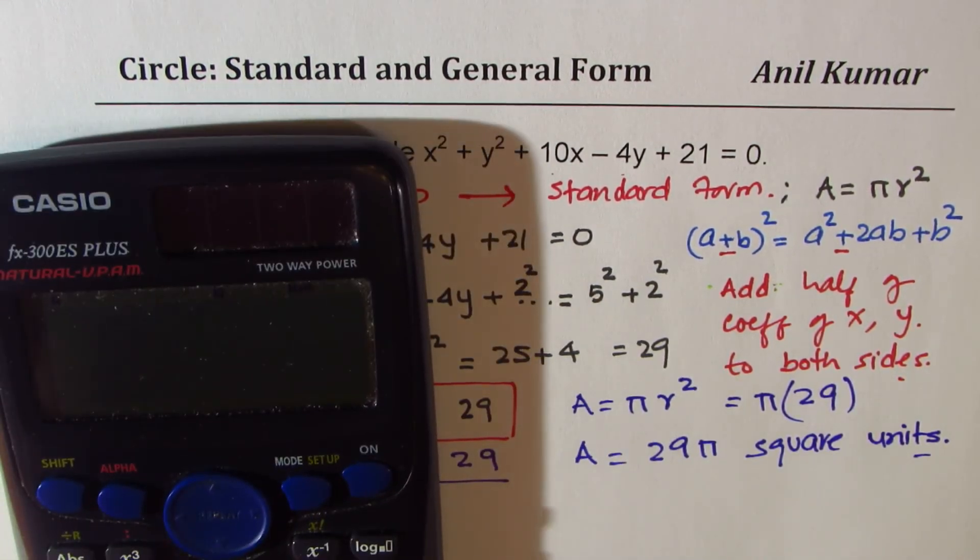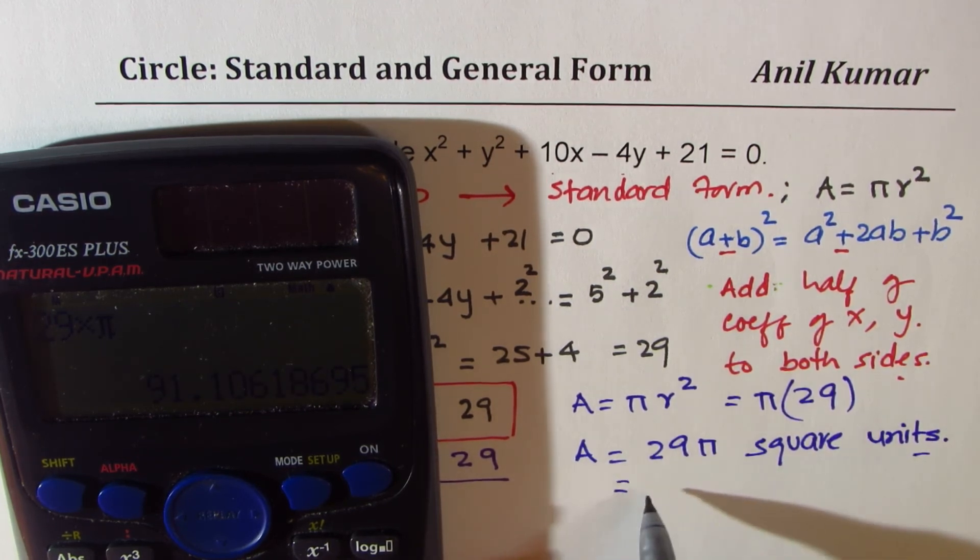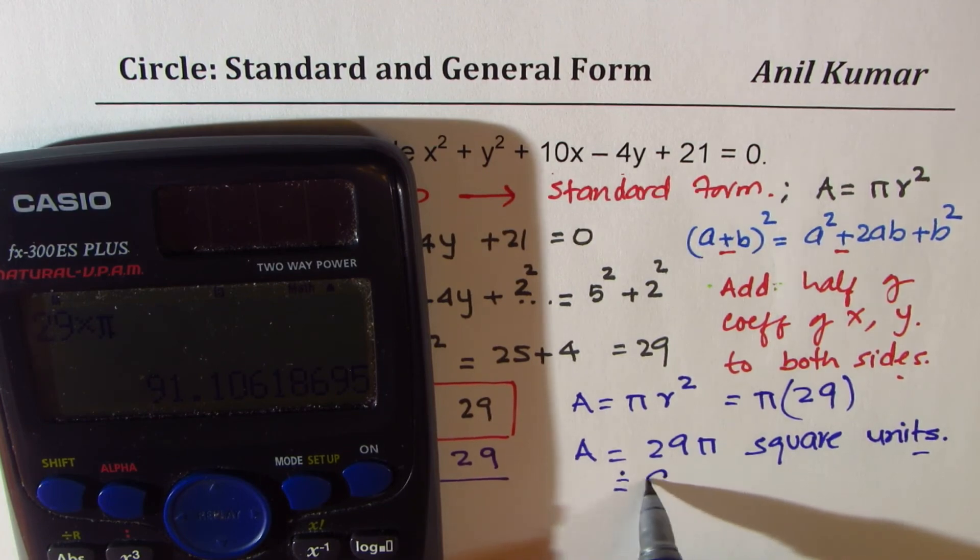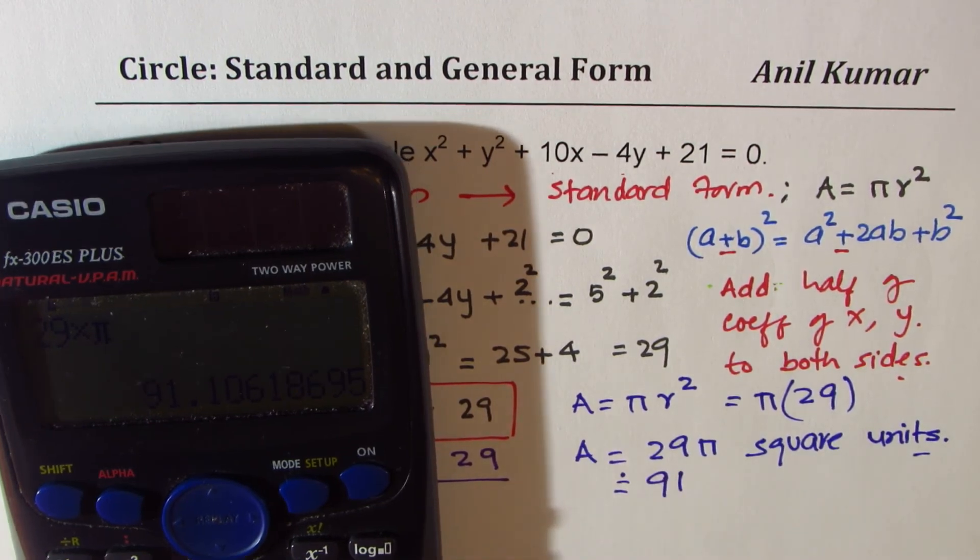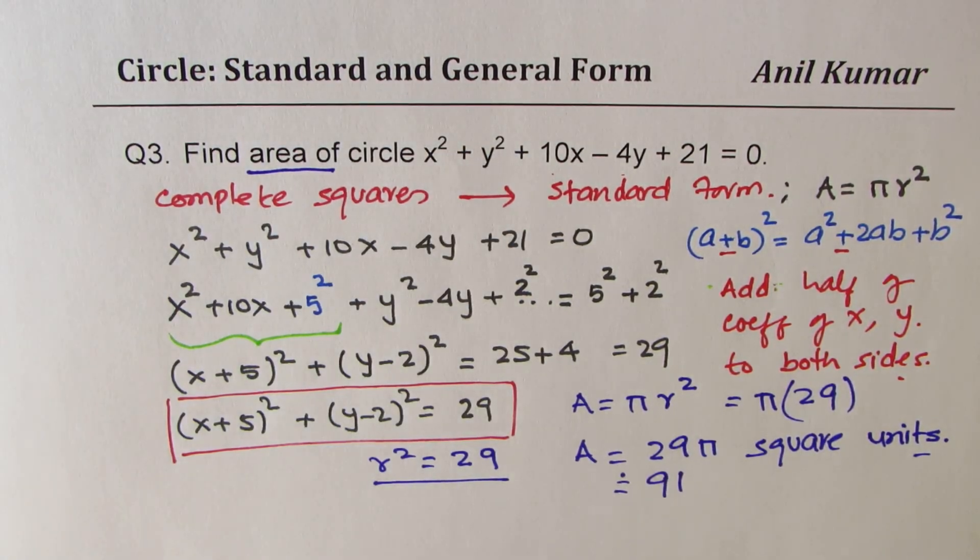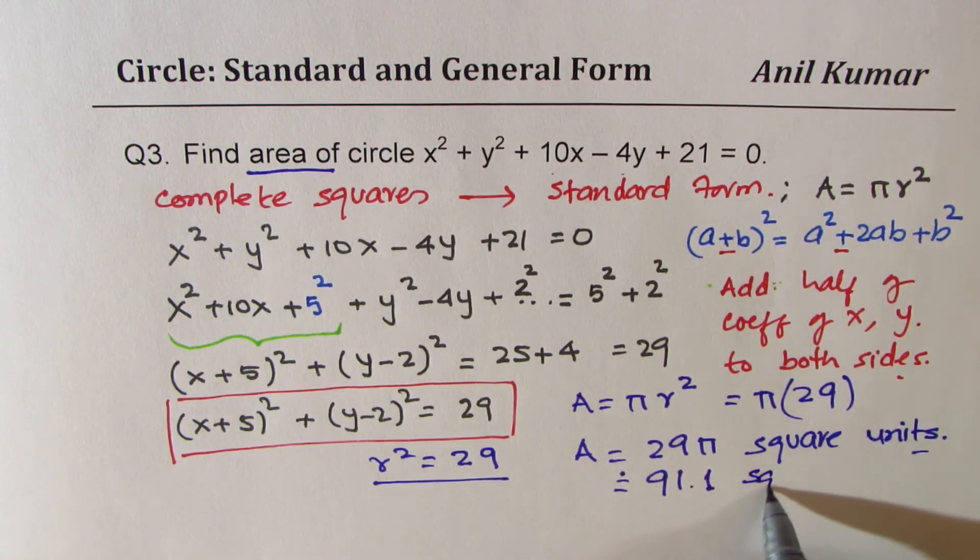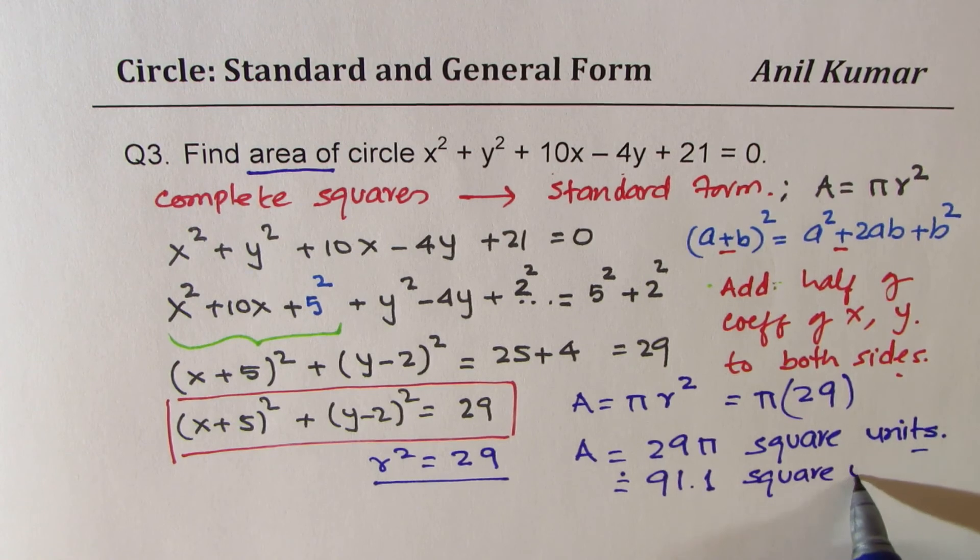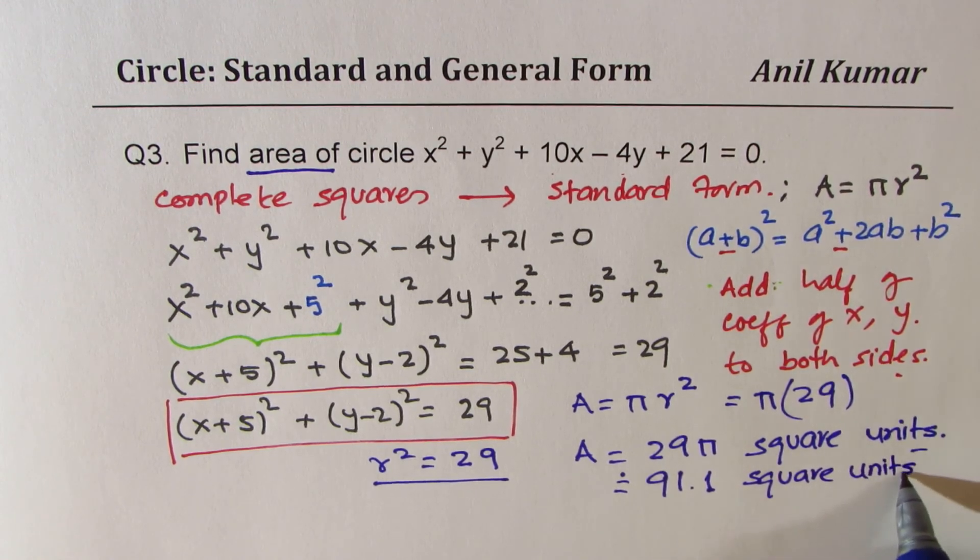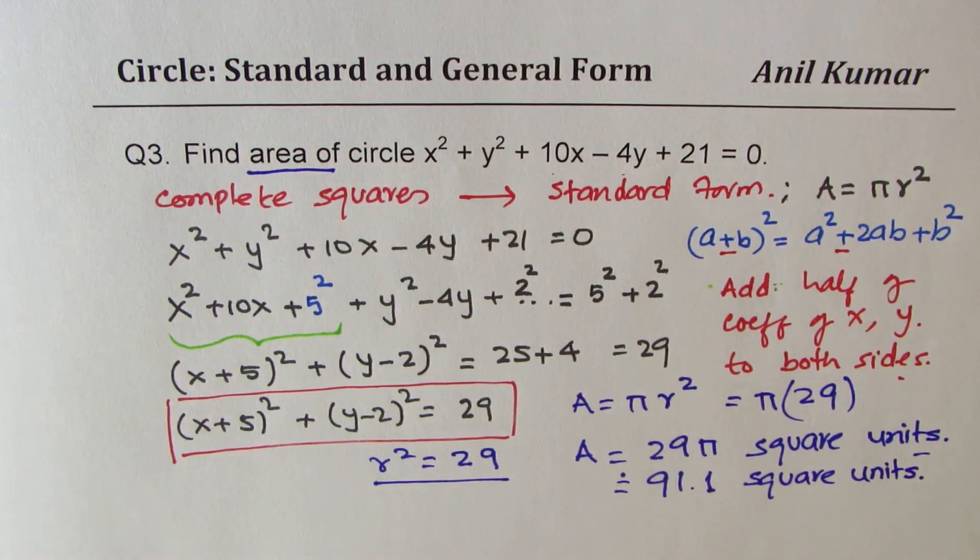Perfect. So that is how such questions should be solved. Now let's calculate this. So we'll do 29 times π, which is equal to, in decimals, approximately 91.1 square units. So that is how this question can be solved.